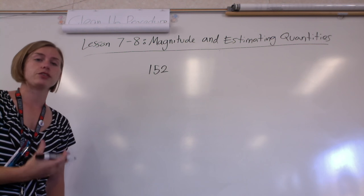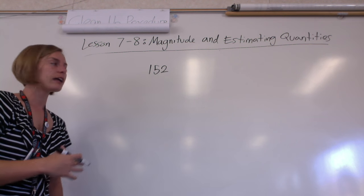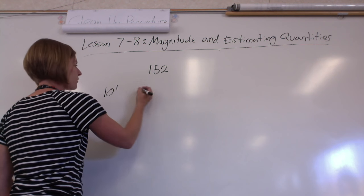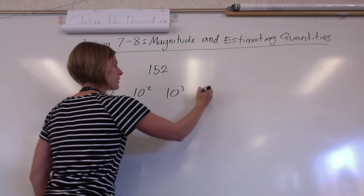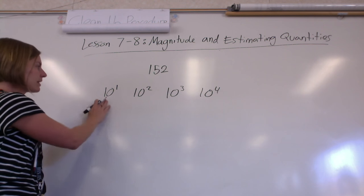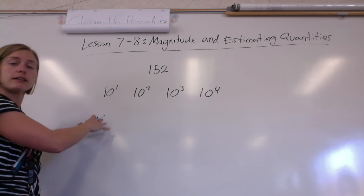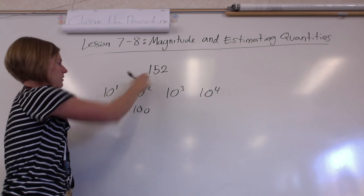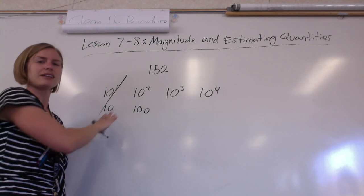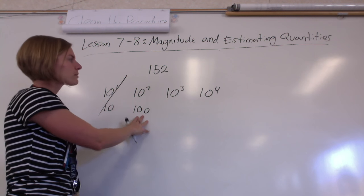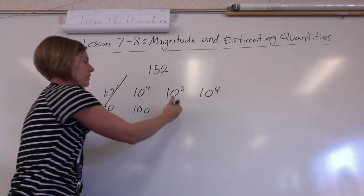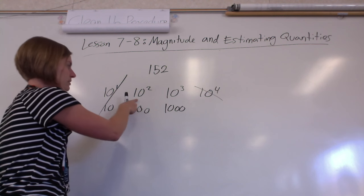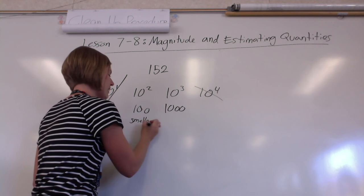So if I had a number of 152, what's a power of 10 less than this? Let's throw out a couple: power of 1, power of 2, power of 3, power of 4. 10 to a power of 1 is just 10 — that's definitely smaller. 10 to a power of 2 is 100 — also smaller, so we can eliminate 10 to the first. 10 to a power of 3 is 1000, which is bigger. So 10 squared is the power of 10 that's smaller, and 10 cubed is the power of 10 that's bigger.